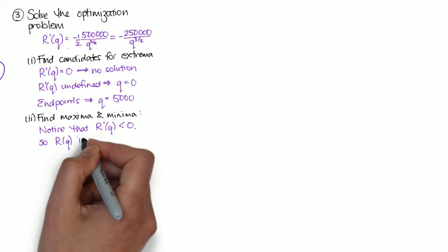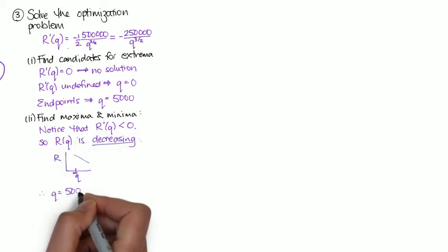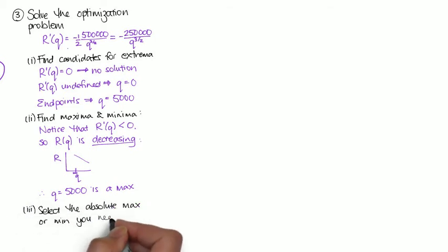Next I use those values to find the maxima and minima. In this case, my first derivative is always negative, i.e. my function is decreasing. So 5000 is my maximum.